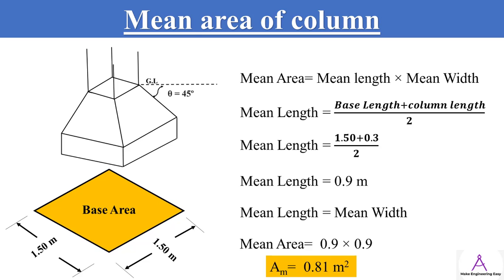After finding the base area of the footing, now we are going to find out the mean area. For the mean area we require mean length and mean width. For mean length take the average of column length and base length. For mean width take the average of column width and base width. Multiply the mean length with mean width. We find out the mean area which equals 0.81 square meters.